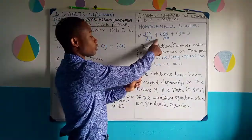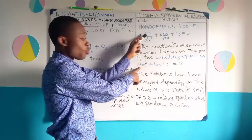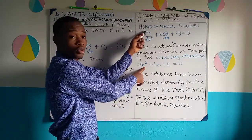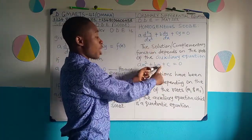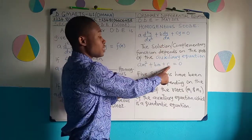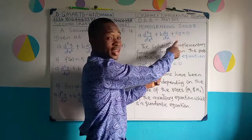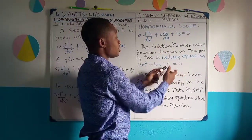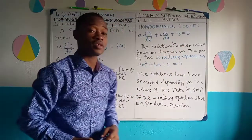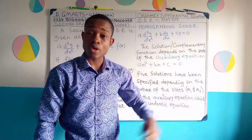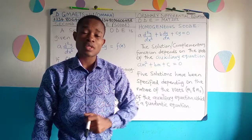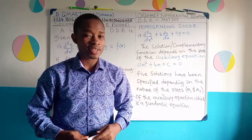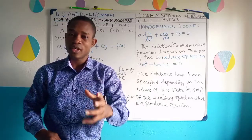The auxiliary equation is obtained from the SODE: a·n² + b·n + c = 0, where n represents the derivative order. The coefficient a goes with n², b with n¹, and c with n⁰ (which equals 1). When you solve this quadratic auxiliary equation, you obtain the roots m1 and m2, and the roots determine the solution of the homogeneous SODE.